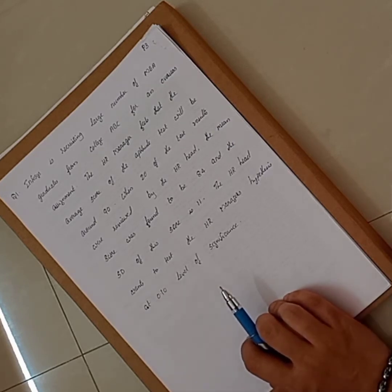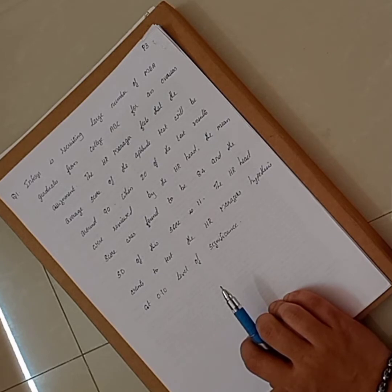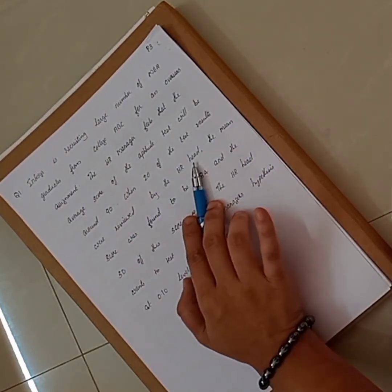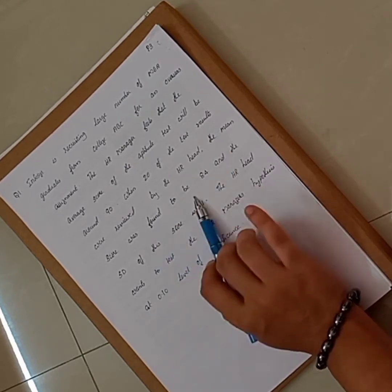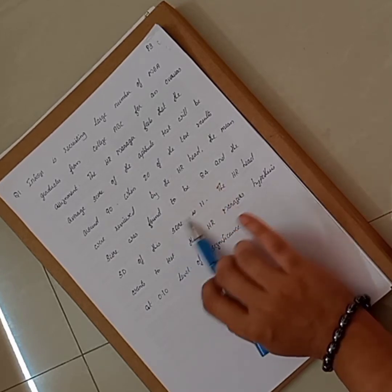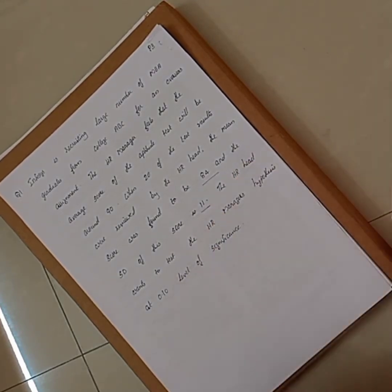The HR head wants to test the HR manager's hypothesis at 0.10 level of significance. The HR manager's assumption is that the average aptitude score is 90. The population size is not given, but 20 test results were sampled. The sample mean was 84 — not 90 — and standard deviation is 11. The HR head wants to determine whether the HR manager's assumption is right or wrong.